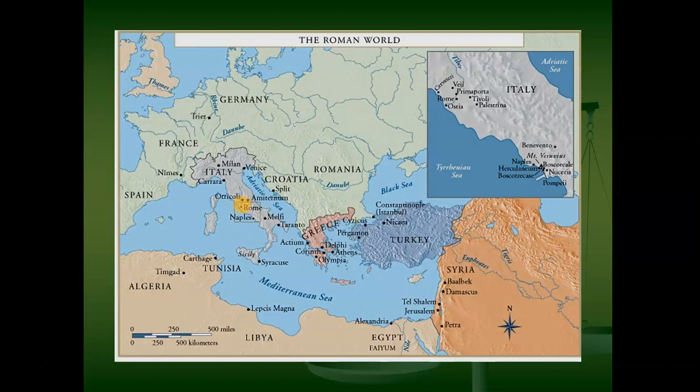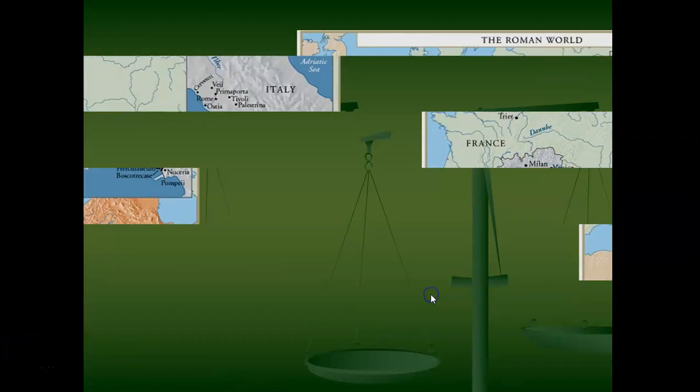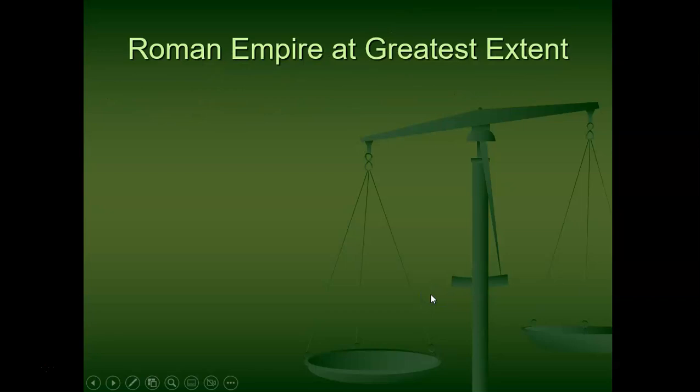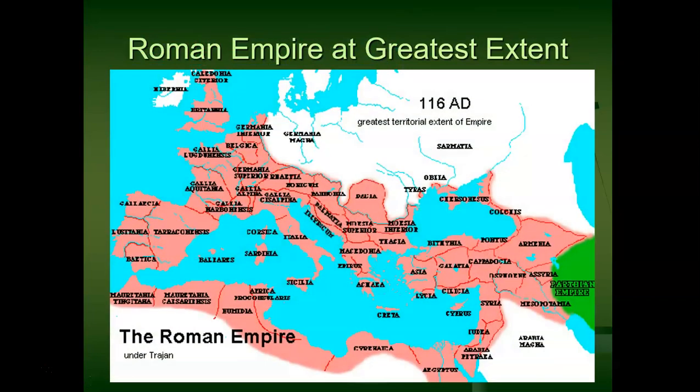Originally Rome is just the little orange area in that map you see there — a small, tiny little area that eventually blossoms out to include all of Italy, Greece, and Turkey. And eventually, later as it becomes an empire, Rome basically gets most of Western Europe, all of North Africa, all of the ancient Middle East, shown as the pink area on the map.